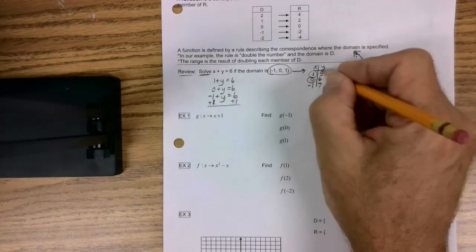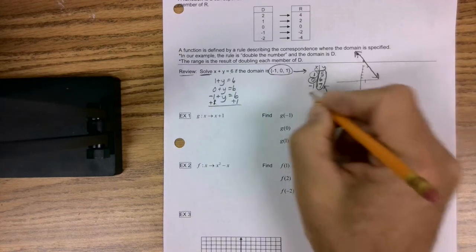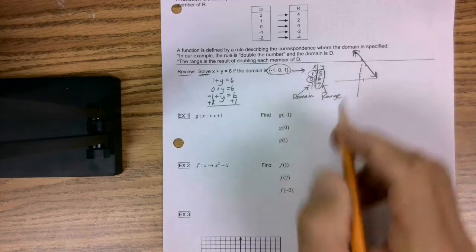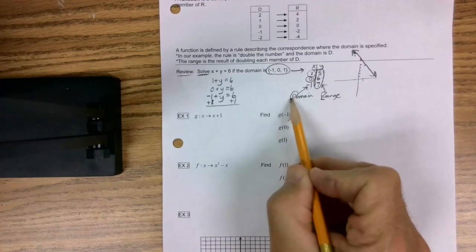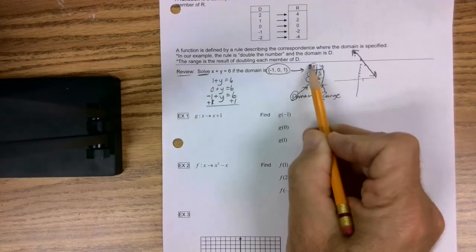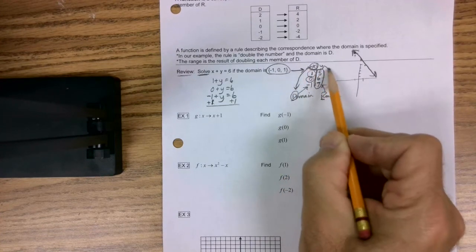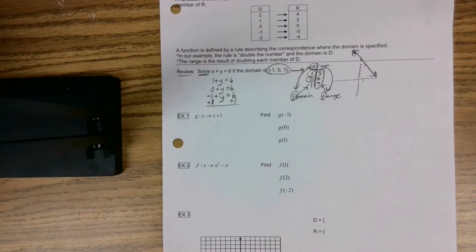Now, I didn't say this, but what is that? That's my range. Don't forget that. What's that? That's my domain. Now, a memory tool. What comes first in the alphabet? D or R? Ding, ding, ding, ding, ding. D. What comes first in the alphabet? X or Y? Ding, ding, ding, ding. So you can remember, X goes with D. Y goes with R, just for the alphabetization rule.